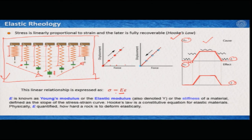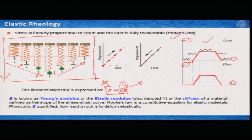In some books or texts, you may find E written as Y — you just have to see their common understanding. Young's modulus is defined as the slope of the stress-strain curve. This equation is also known as Hooke's law, and it is a constitutive equation because we have a dynamic parameter on one side and a kinematic parameter on the other, related by a constant. Physically, E quantifies how hard a rock is to deform elastically — that is why the term stiffness came into the picture.